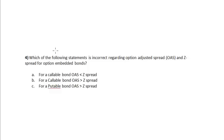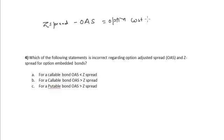Which of the following statements is incorrect regarding the option adjusted spread and the Z-spread for option-embedded bonds? We have the equation: Z-spread (zero volatility spread) minus OAS (option adjusted spread) equals option cost in percentage.